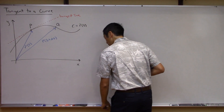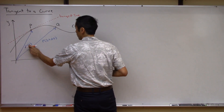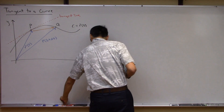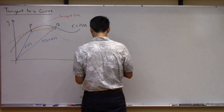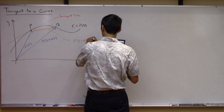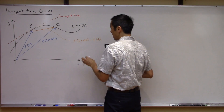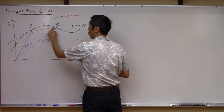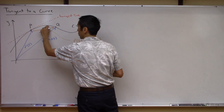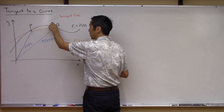I think everyone sees what's going on at this point. There's a vector going from R of T to R of T plus delta T — that's this orange vector. And everyone would agree that this orange vector can be described by R of T plus delta T minus R of T. Now, if I start letting delta T be small, this orange secant vector is going to walk Q back. As delta T gets smaller and smaller, the orange line is going to line up with the tangent line. So that's exactly what we're looking for.